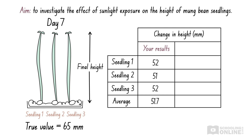Let's go back to our experiment on the growth of mung bean seedlings in sunlight. Your classmate, Andrew, performs the experiment just like you, using the same method and equipment, making sure to use mung bean seedlings with an initial height of 10 millimetres. These are his results, showing the change in height of three mung bean seedlings after seven days of growth in sunlight. Even though his results are slightly different to yours, we can see that they agree with each other. When we calculate the average increase in seedling height, we find they are almost identical. Since Andrew's results were consistent with your findings, the experimental procedure is reproducible. Therefore, the experiment is reliable even though it produces inaccurate results.